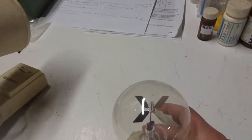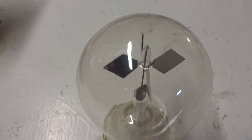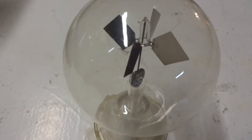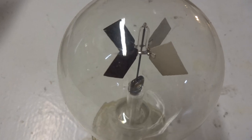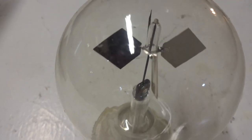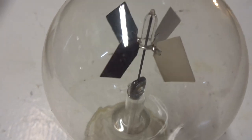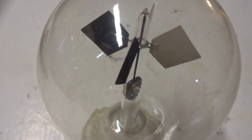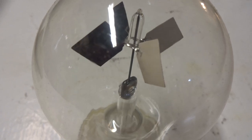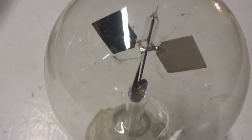Today's demonstration is on the radiometer. So let's get to the demonstration. This is a radiometer on a shaft with four metal vanes. On one side of each vane is painted white, and on the other side is painted black.